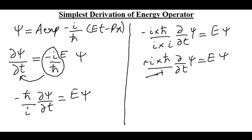These minus 1 will be cancelled out and we have the following: iota h bar partial over partial t of psi equals E psi.